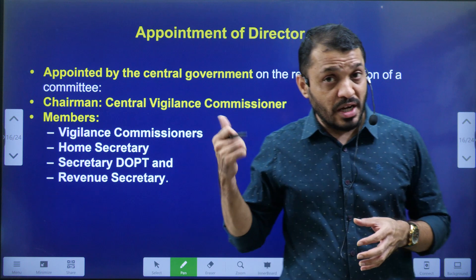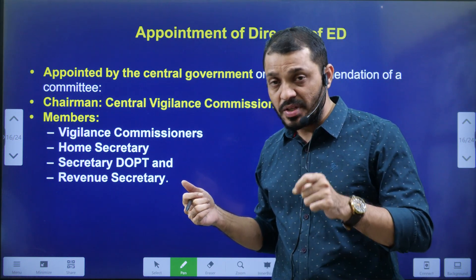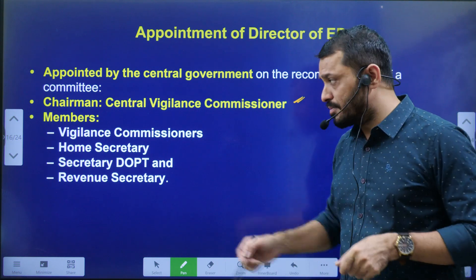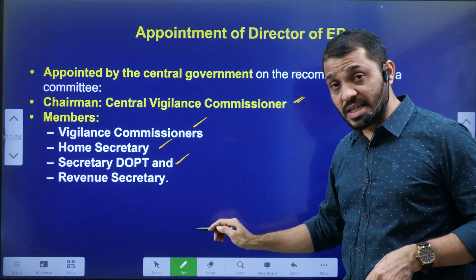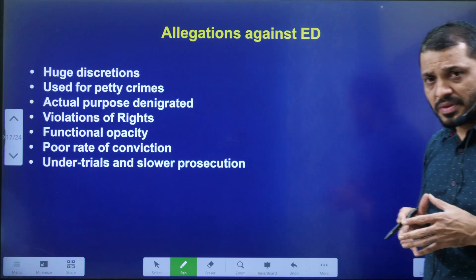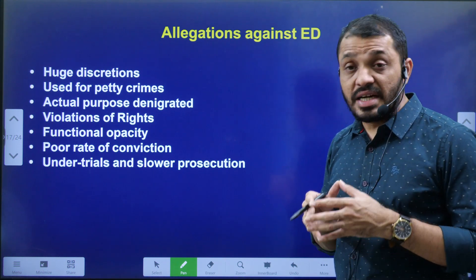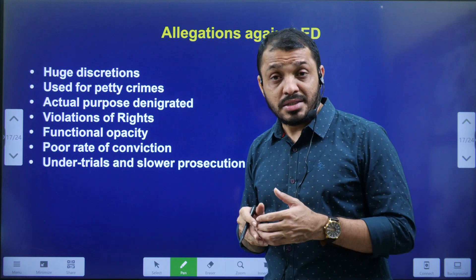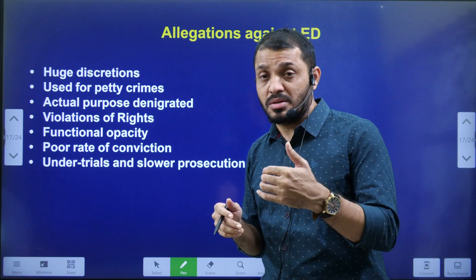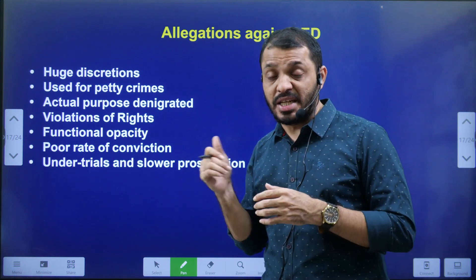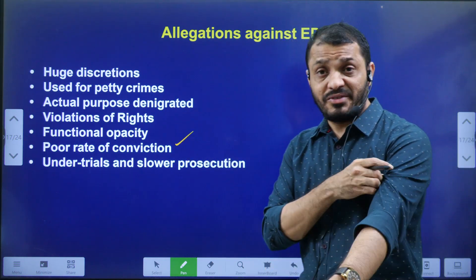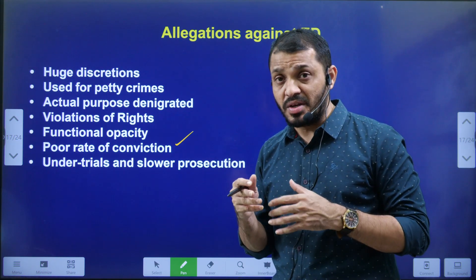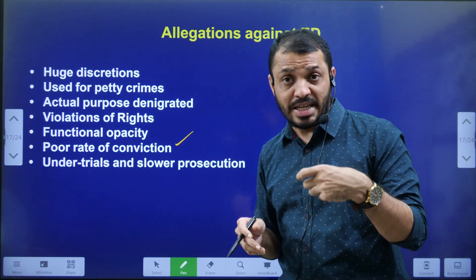The Appointment Committee for the ED Director is headed by the CVC — the Central Vigilance Commissioner — and its members include Vigilance Commissioners, the Home Secretary, the DOPT Secretary, and the Revenue Secretary. The ED is also facing criticism: it is alleged to act on the behest of the government, being more favorable to those in power; the rights of those subjected to searches are being violated; and there is a poor conviction rate, suggesting that many cases are politically motivated rather than legally sound.